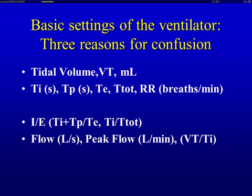A first source of confusion when you have different ventilators in your unit is that for volume control ventilation, you have two ways of setting flow. One way is to tell the ventilator about timing — for instance, the classical I:E ratio. Many ventilators work with the I:E ratio by default: the ventilator knows the total breathing time, you tell it the I:E ratio, it calculates the inspiratory time, and from the volume and inspiratory time it knows which flow to deliver. On other ventilators, you directly dial the flow.